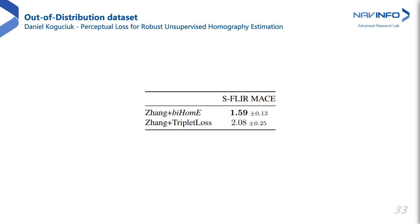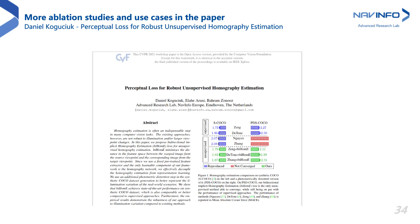One of the shortcomings of using models pre-trained on ImageNet is possible suboptimal results on out-of-distribution datasets. To test this vulnerability, we compare Zhang's method with the original and our pi-HOMI on the FLIR thermal dataset, pre-processed similar to S-COCO. Although thermal images are vastly different from the color images the loss network was trained on, our pi-HOMI still achieves better performance. Please take a look at our paper for more ablation studies and use cases.